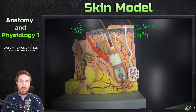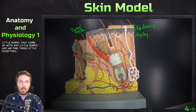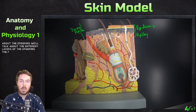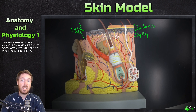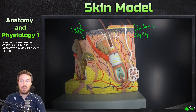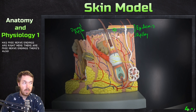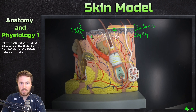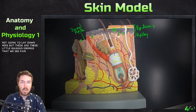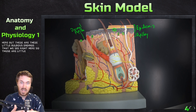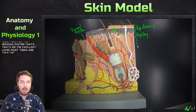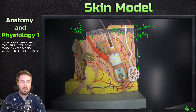Within these little bumps — the dermal papillae — we find little receptors. One important thing about the epidermis: it is avascular, meaning it does not have any blood vessels in it, but it is innervated, meaning it has free nerve endings. There are also tactile corpuscles, also called Merkel discs — little bulbous endings that are light sensory pressure receptors for the nervous system. That's the papillary layer.